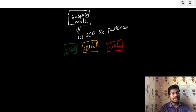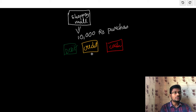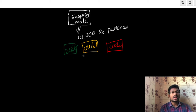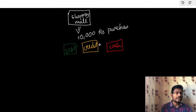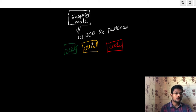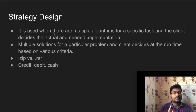For example, if we pay by debit card, the bank processes it as a debit. If we pay by credit card, the bank processes it differently. And if we pay by cash, that's another solution. So we need to solve this problem with a solution decided at runtime — that's the strategy pattern in a simple example.